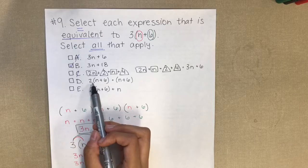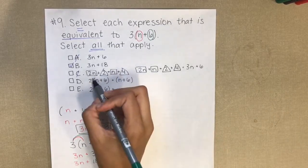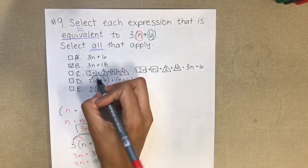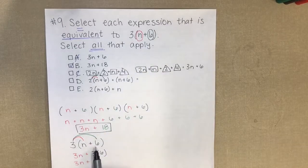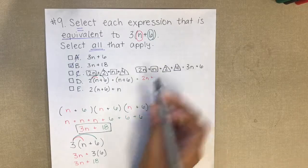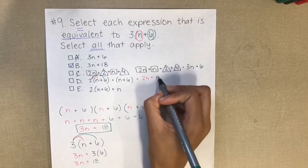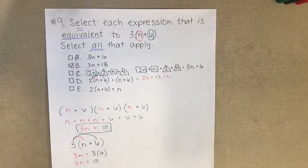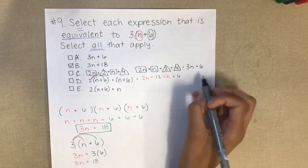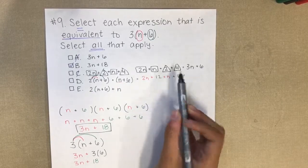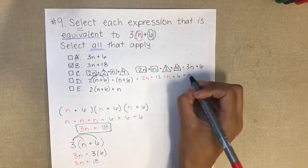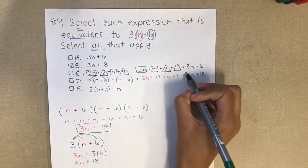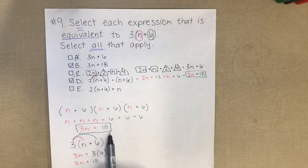Answer choice D is a little trickier — it requires an extra step. I'll first distribute: 2 times n gives me 2n, and 2 times 6 gives me 12. Then I add the remaining terms: there's an n and a 6. Combining like terms: 2n plus 1n is 3n, and 12 plus 6 is 18. That gives 3n plus 18, which means answer choice D is equivalent to our expression.